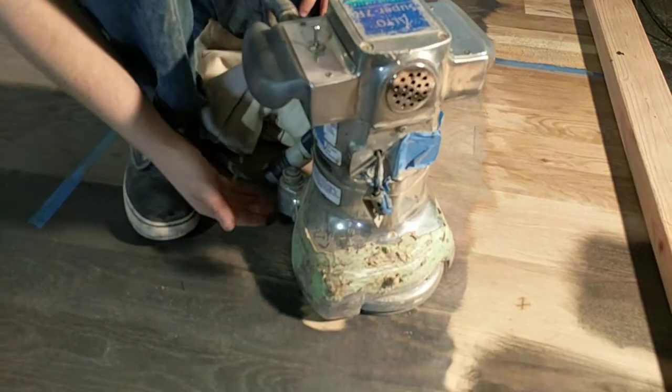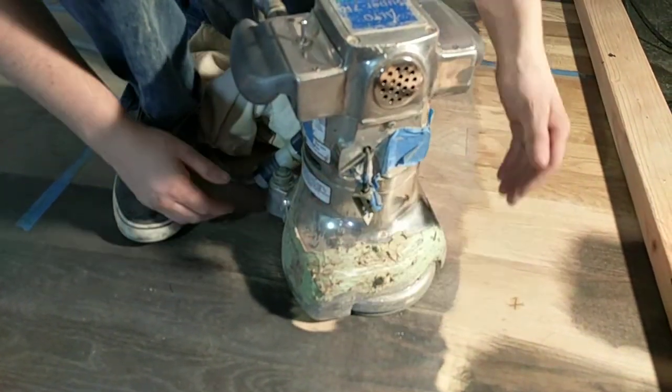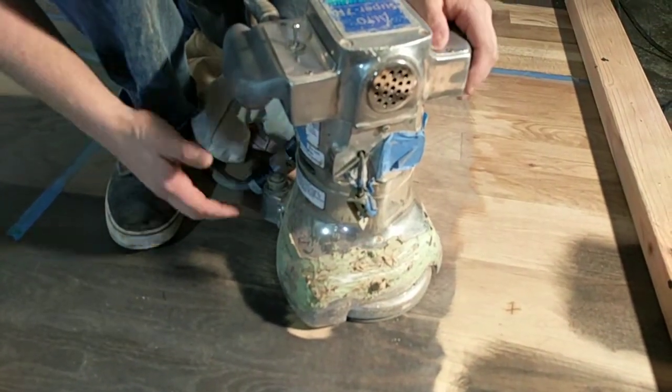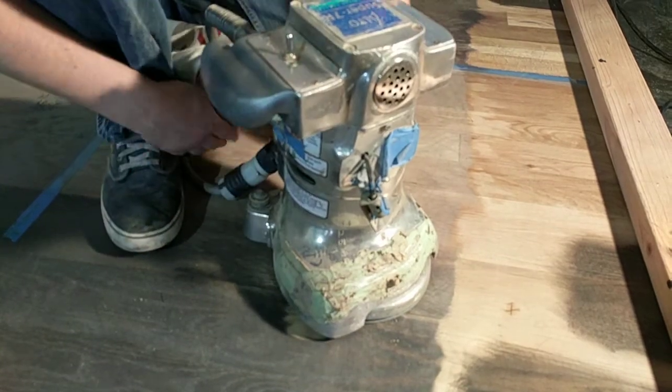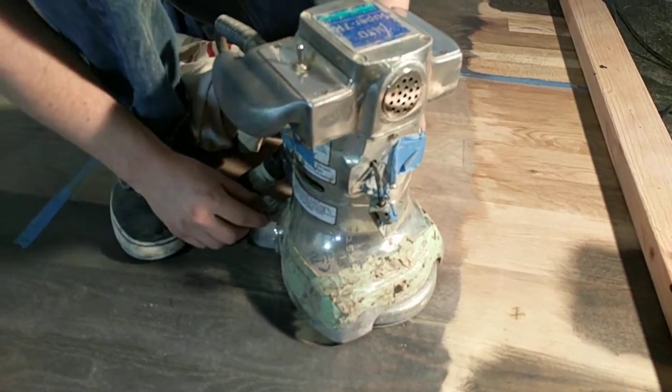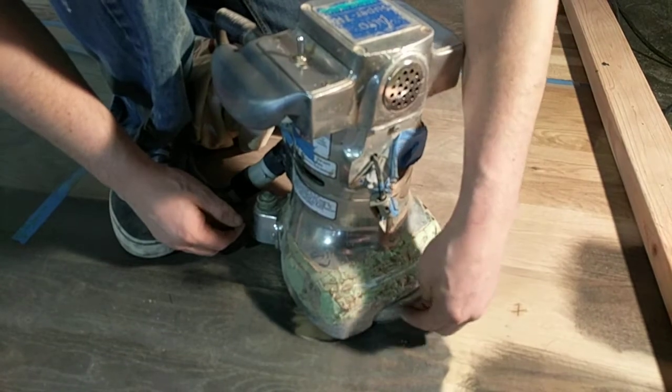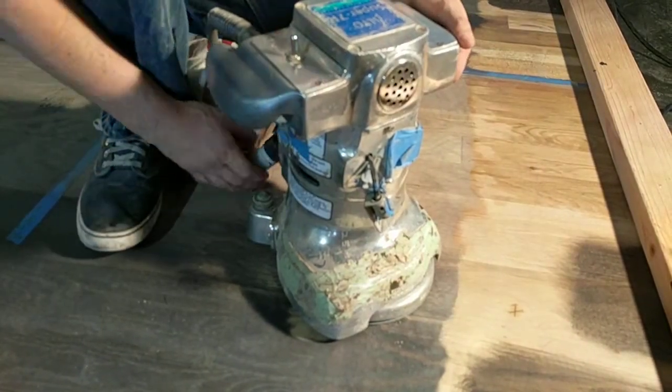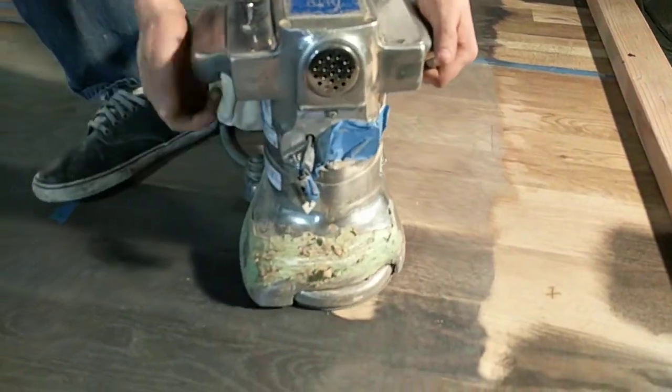And by putting them down that far we're getting ample pressure on the front. We might be getting a little too much but we're going to start from there. This should be cutting, if we are right in our assumption that these are even, it should be cutting around the 12 o'clock, 1 o'clock or 11 o'clock area. So we'll do a test.